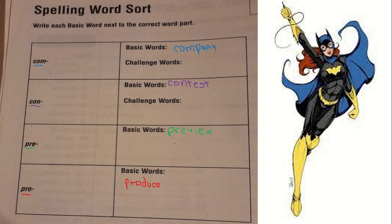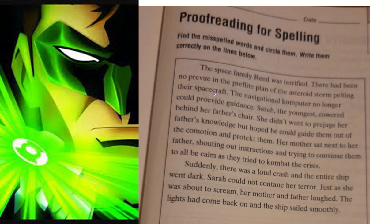The next page is for spelling, page 303. You will find the misspelled words and circle them, then write them correctly on the lines below. The space family read was terrified. There had been no review in the pre-flight plan of the asteroid storm helping their spacecraft. The navigation computer no longer could provide guidance. Sarah, the youngest, cowered behind her father.